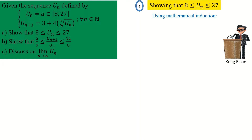Mathematical induction is easy to use because it follows a set of theory steps. To use it, you need a statement — you are essentially proving the truth value of a statement. We begin by letting the statement P(n) be what we want to prove: that u_n is less than 27 and greater than 8 for all n in the set of natural numbers.